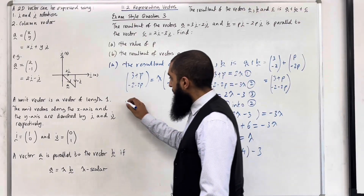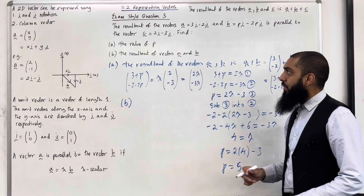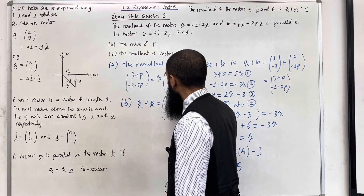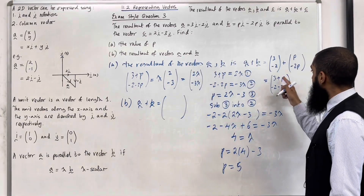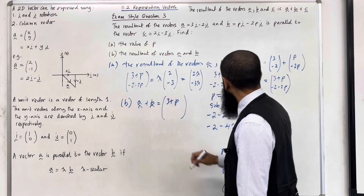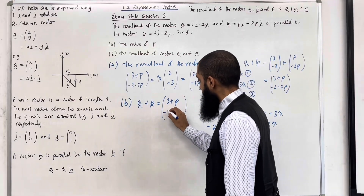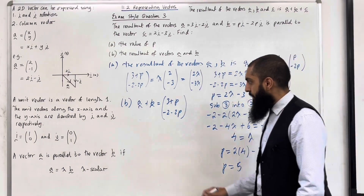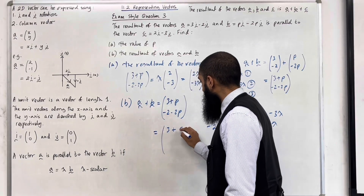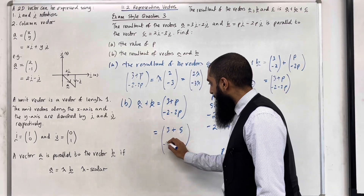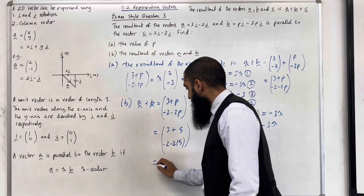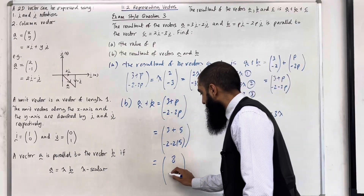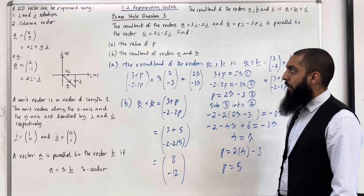Moving on to part B. We want to work out the resultant of vectors A and B. That resultant was A plus B, which is (3+p, -2-2p). Since p equals 5, substituting back in: the i component is 3 plus 5 equals 8, and the j component is minus 2 minus 2 times 5 equals minus 12. So the resultant is (8, -12). That completes part B of the question.